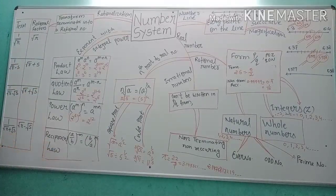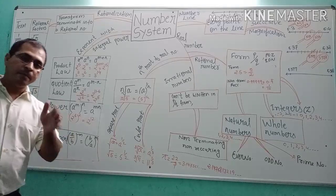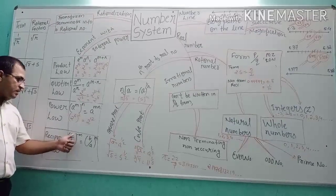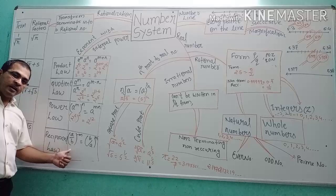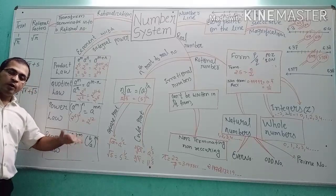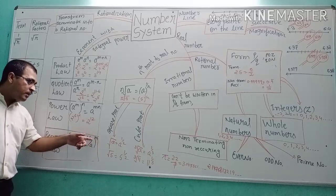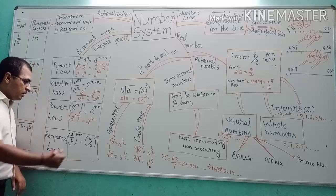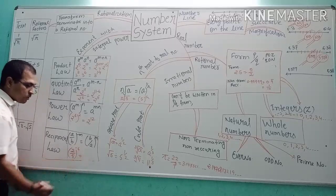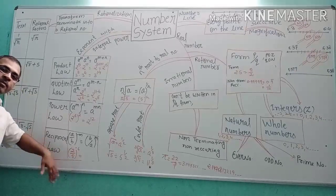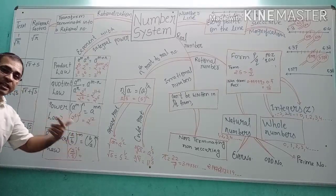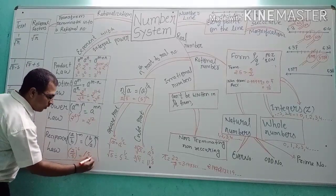Then there is the reciprocal law. The term is in p by q form but with a negative integral power. When the power is negative, numerator and denominator swap and the power becomes positive. For example, (2/5) to the power minus 6 becomes (5/2) to the power plus 6.